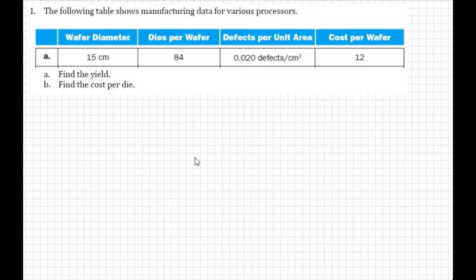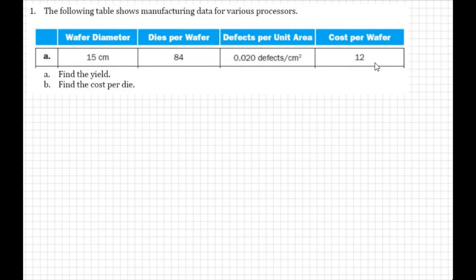The question presents a table showing manufacturing data for various processors. The given values are: wafer diameter = 15 centimeters, dies per wafer = 84, defects per unit area = 0.020 defects per centimeter square, and cost per wafer = 12. We need to find the yield and the cost per die.